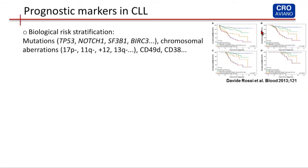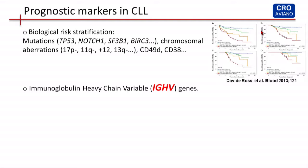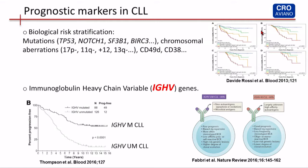But among all the different prognostic parameters in CLL, I can say the historical one — one of the most studied — is the immunoglobulin heavy chain variable gene, the IGHV gene. Patients that are unmutated for this gene have poor prognosis, high risk of genetic lesion, and a high degree of clonal evolution, while patients with mutated immunoglobulin have good prognosis, low risk of genetic lesion, and a lower degree of clonal evolution.